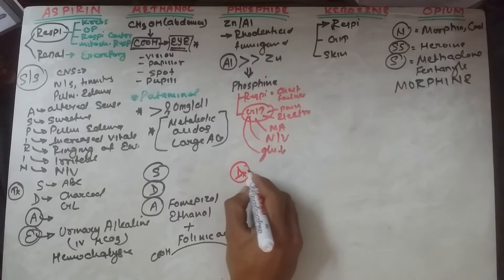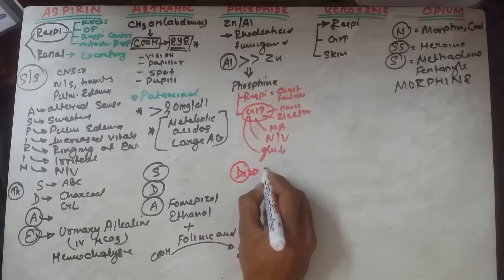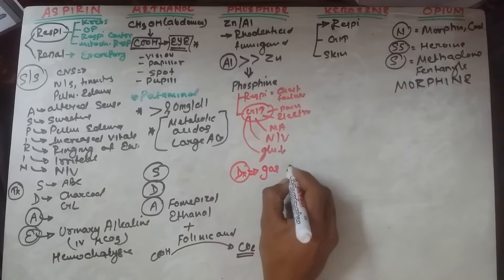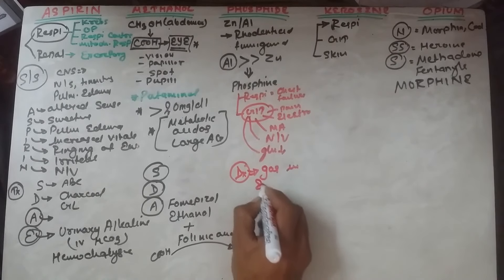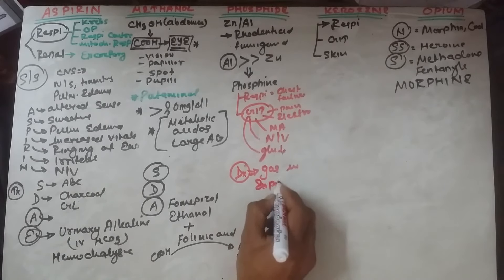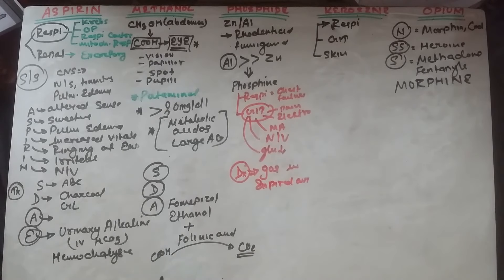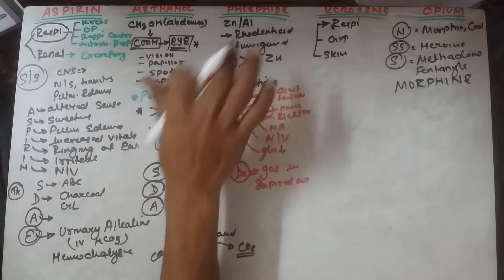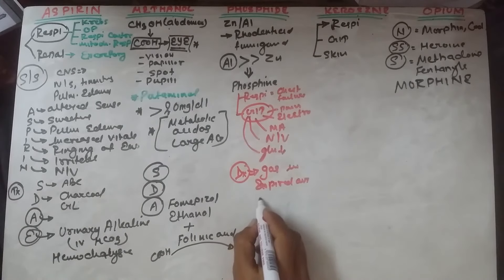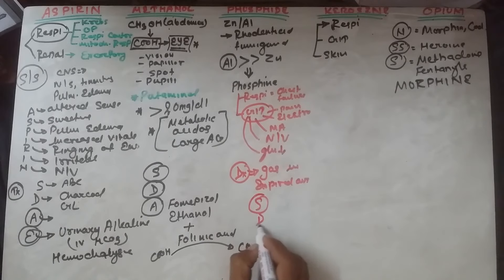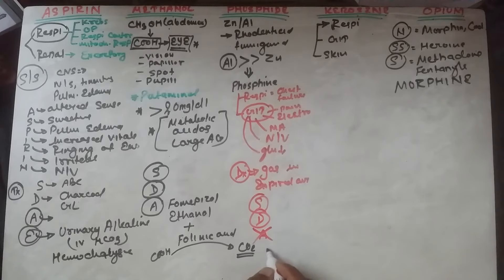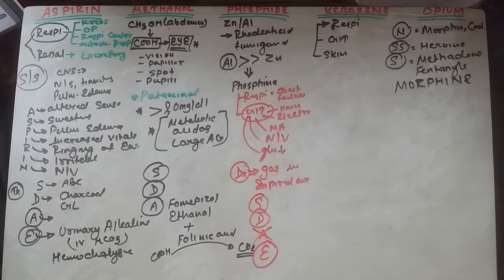For diagnosis, detection of phosphine gas in exhaled/expired air is a clear-cut diagnosis. Treatment is supportive — there is no specific antidote for phosphide. Stabilize the patient, decontaminate, and use elimination measures as appropriate.